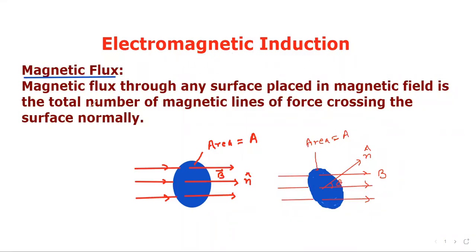Electromagnetic induction. Magnetic flux. Magnetic flux through any surface placed in a magnetic field is the total number of magnetic lines of force crossing the surface.